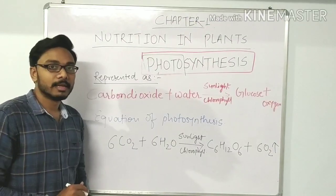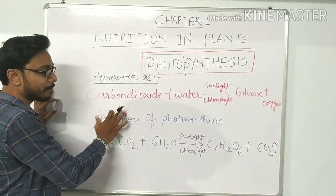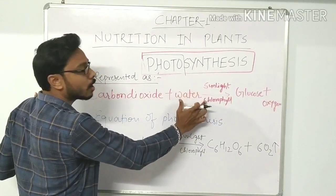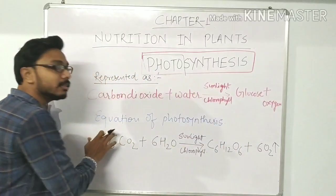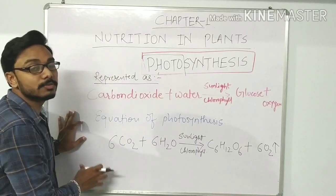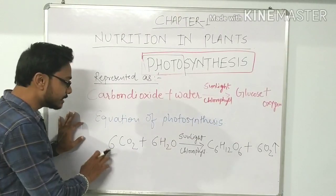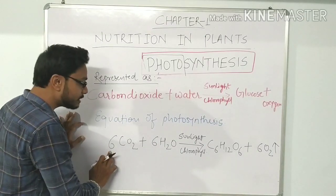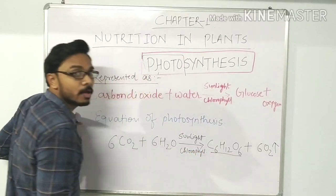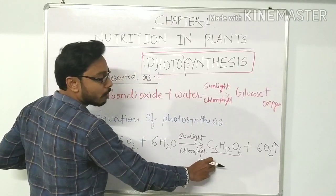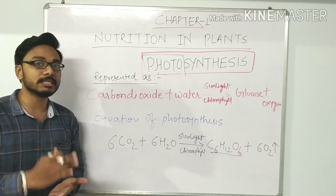Now we will see how photosynthesis is represented. Photosynthesis is represented as: carbon dioxide plus water, in the presence of sunlight and chlorophyll, produces glucose and gives out oxygen. The equation of photosynthesis — which is also important for higher education — is: 6CO2 + 6H2O in the presence of sunlight and chlorophyll yields C6H12O6 (glucose) + 6O2. Six molecules of carbon dioxide and six molecules of water combine to form one molecule of glucose and six molecules of oxygen.